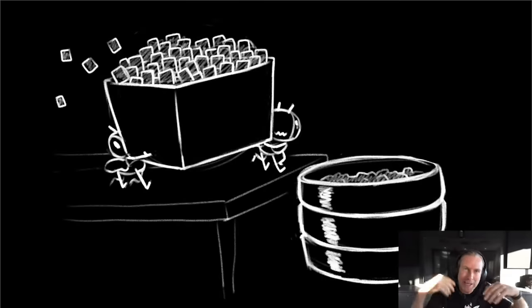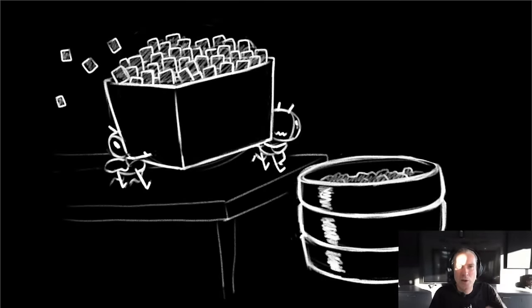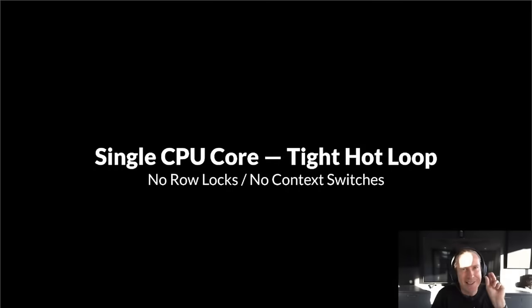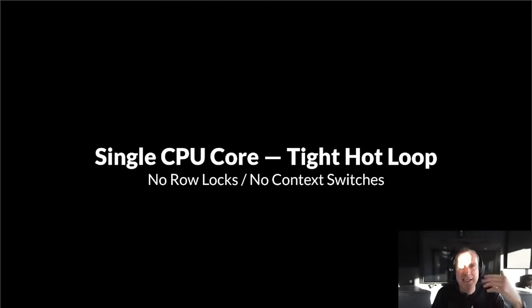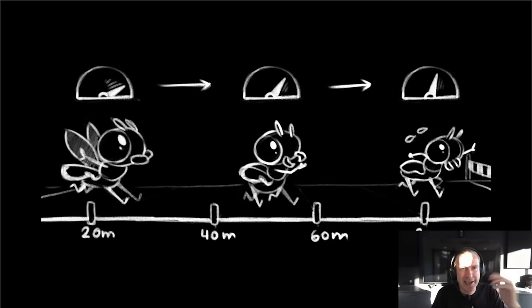This is the breakthrough in Tiger Beetle, and it's so simple. All we did was put 8,000 more things in the query and we get 1,000 times more performance. When you make a trip to the database with 8,000 transactions in one query, these run through a single CPU core in a nice hot tight loop — no row locks, no context switches. The CPU is like a sprinter; you let it loose on the 100 meters and it's hard to go faster.